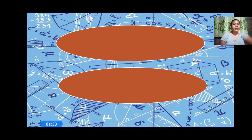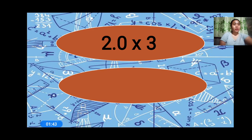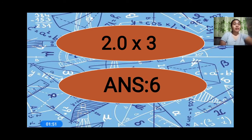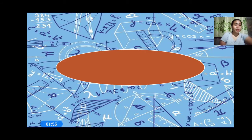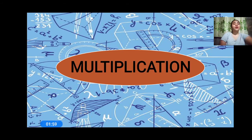So here is the next equation: 2.0 times 3. We are going to multiply. 2.0 times 3 — what's the answer? The answer is 6. Now, let me ask you a question: what operation did we use? Very good, we used multiplication.